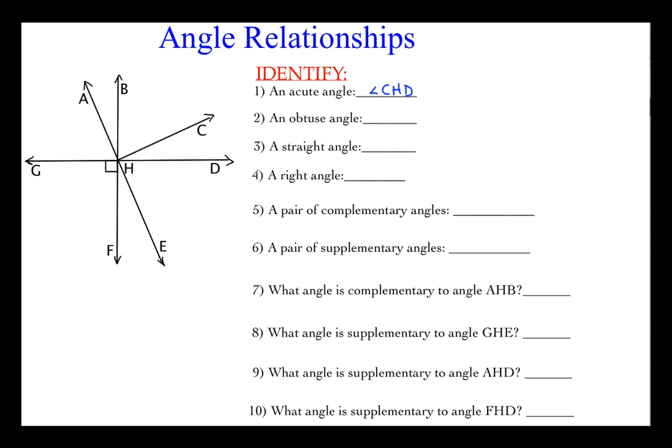Next up, obtuse. Again, lots of different options. I will illuminate one of them here: angle AHD. So it'd be the entire angle right here, and that of course is obtuse. Obtuse angles are angles whose measure comes between 90 and 180. A lot of other options here: we can look at angle GHE, we can look at angle CHF.